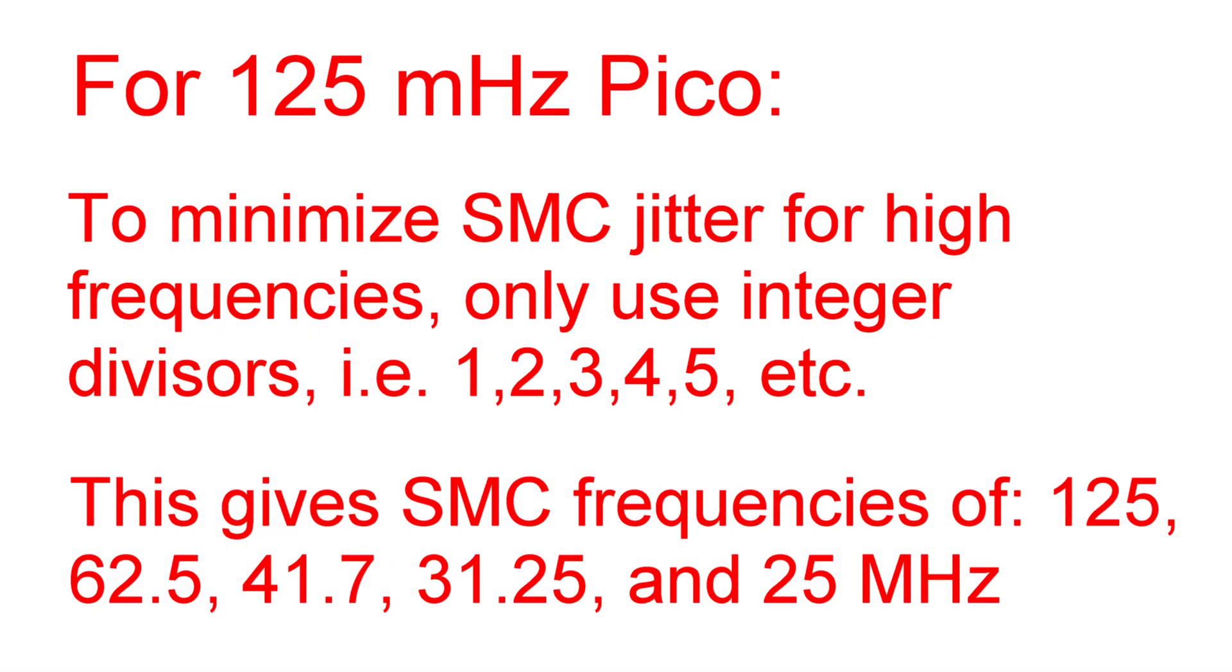This suggests that at high frequencies, we only use an integer divisor and no fractional divisor in order to eliminate jitter in the state machine clock.